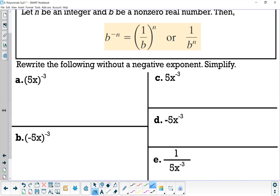Okay, starting with letter A, we have parentheses 5x close parentheses to the negative three. All right, so take the reciprocal, we have one over parentheses 5x close parentheses to the power of three. You don't need to go further for this right now. We're just focusing on writing the expression without the negative exponent. We'll simplify this further later on.